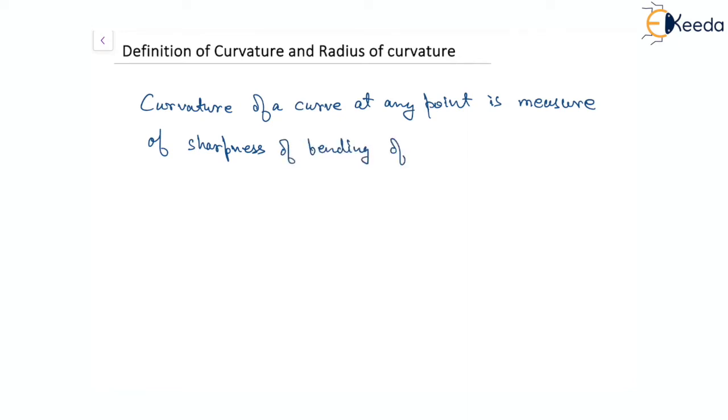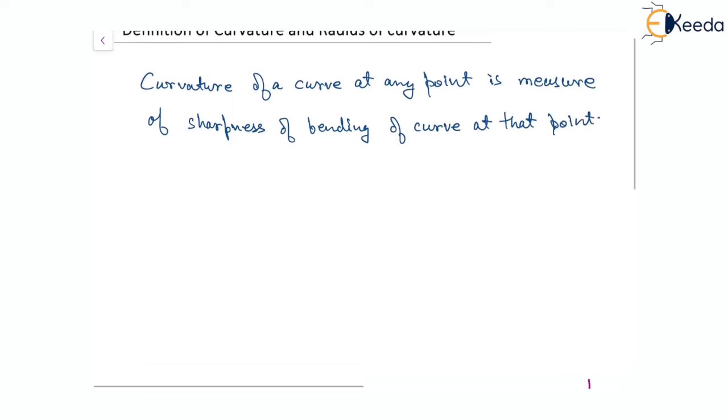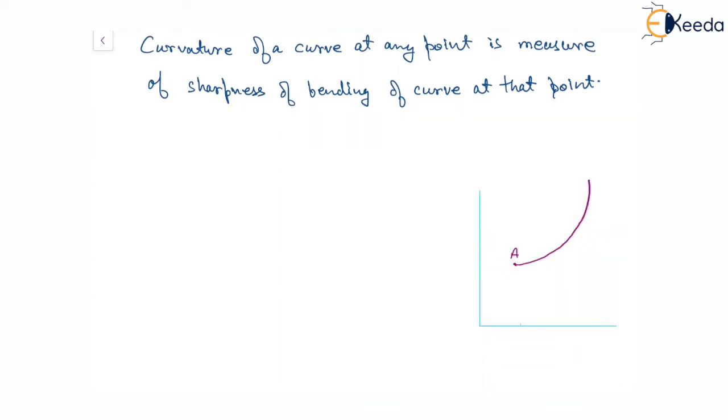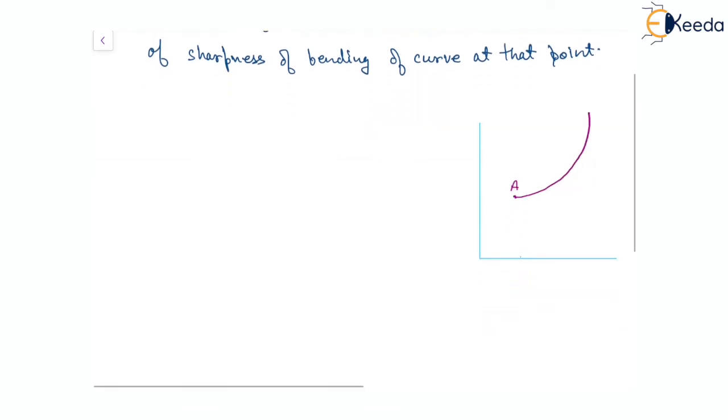Of the curve at that point. Some curves have more bending and some have less. Let's discuss this in the coordinate system. Let's say we have an arc AB - AB is the arc which is your curve, and let's say point A is fixed.